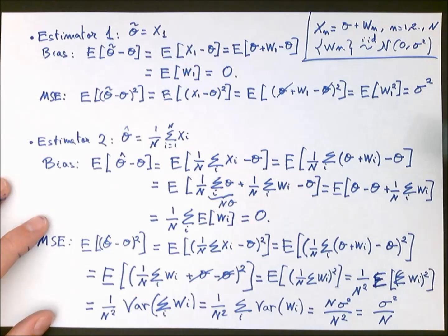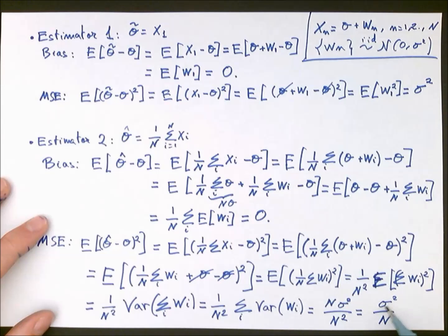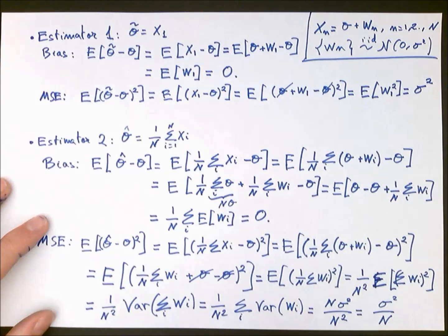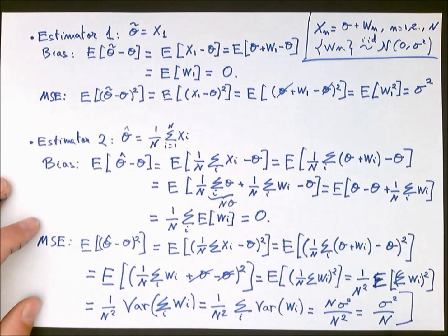Comparing the two estimators: Estimator 1 has an MSE equal to sigma squared, the full noise variance, regardless of how many samples are used since it only uses the first measurement. Estimator 2 has an MSE of sigma squared divided by N — the more samples we have, the smaller the MSE. Obviously, between the two estimators, we prefer the second one, which has the lowest MSE.